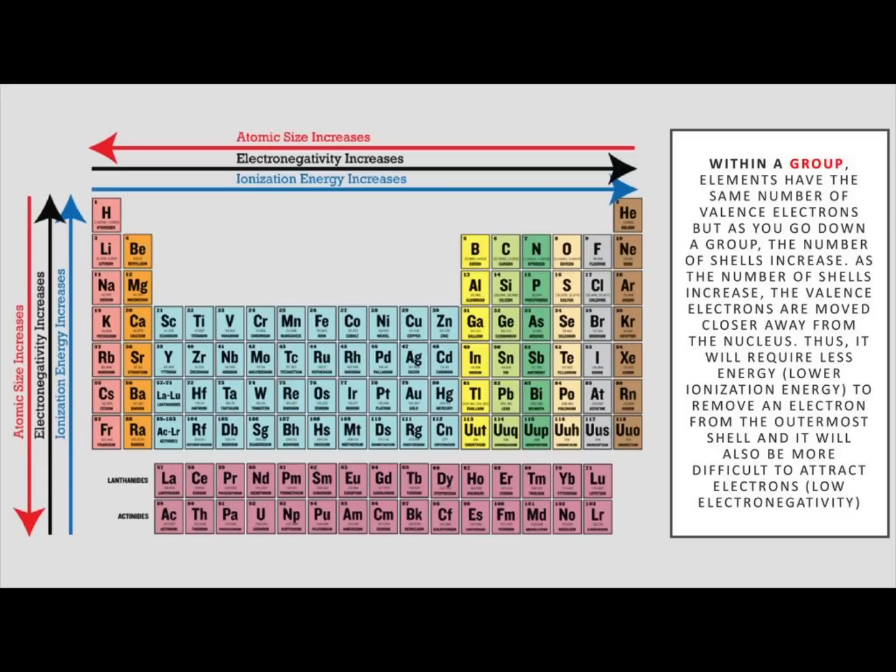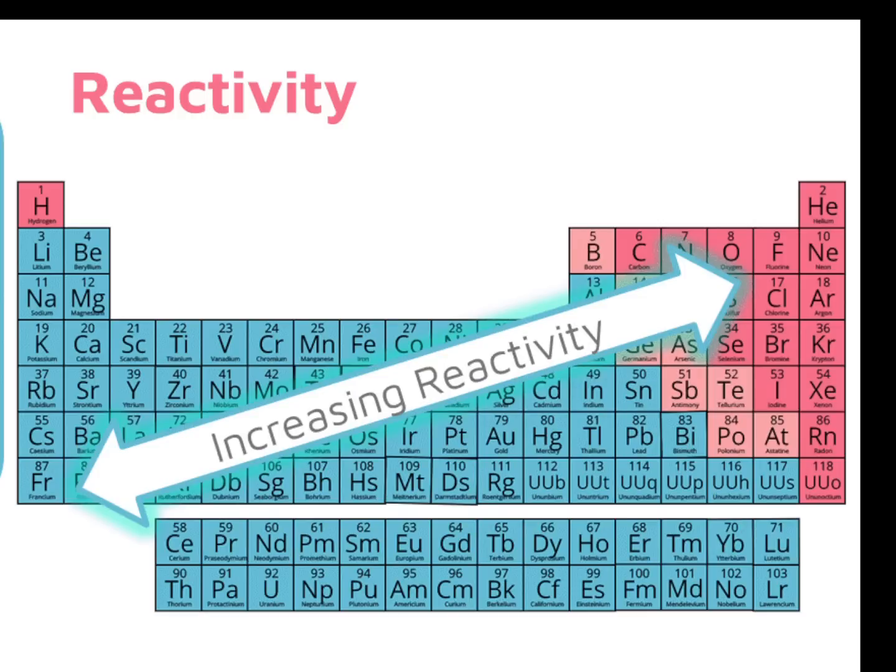There are other secrets hidden in the periodic table, such as reactivity. Starting with group 18, period 1, and drawing a diagonal line to group 1, period 7, we see reactivity increase as it approaches group 1.